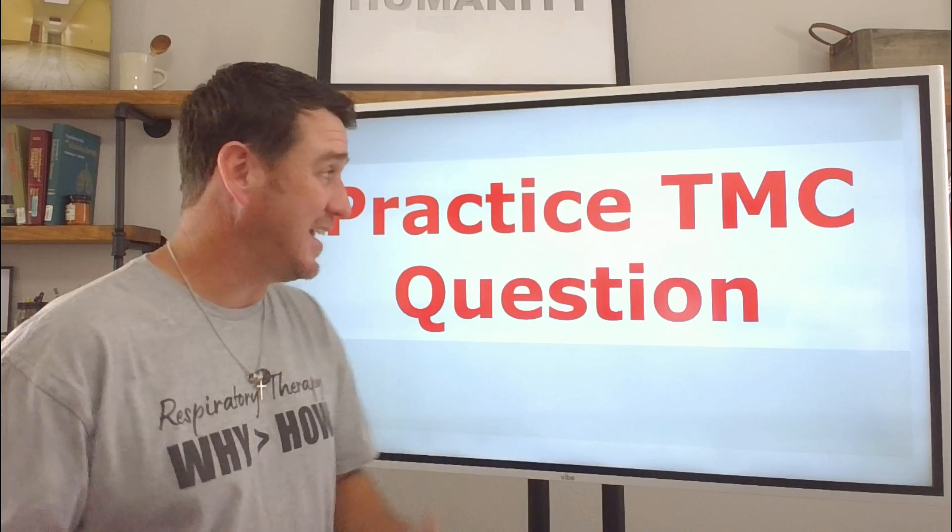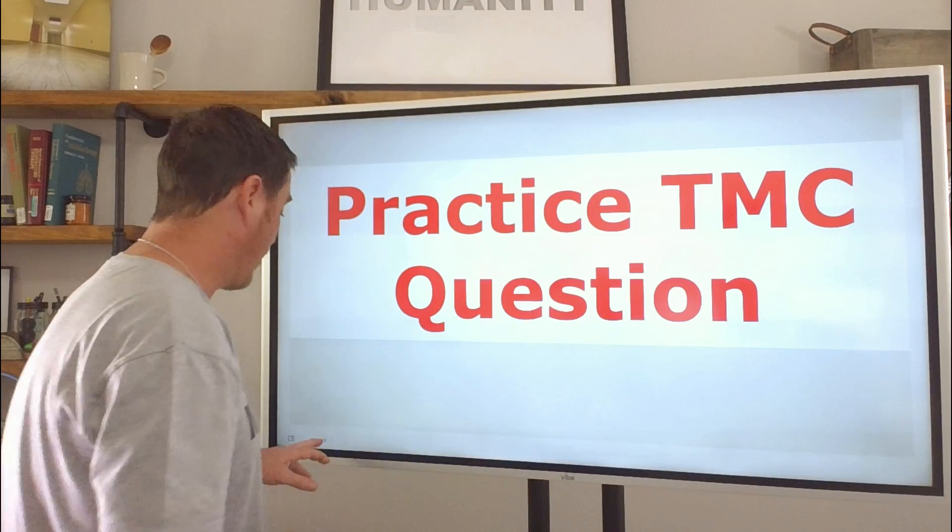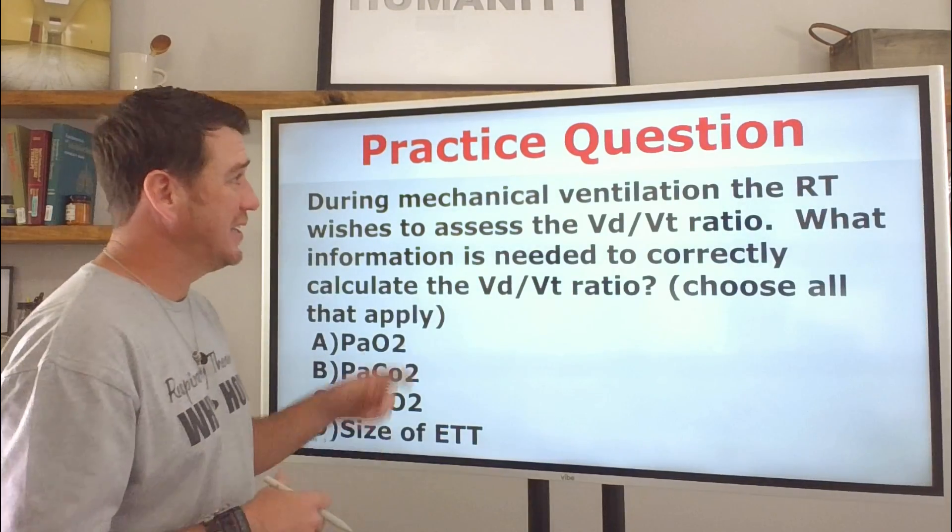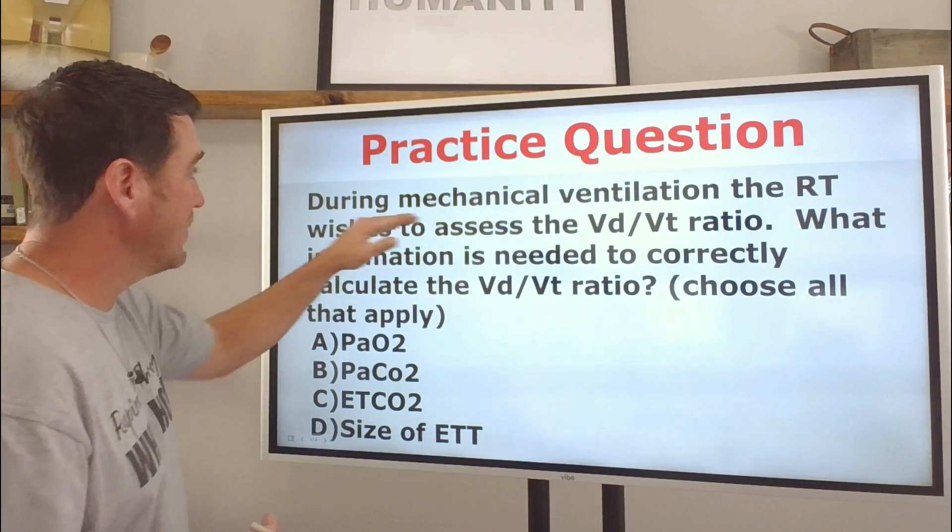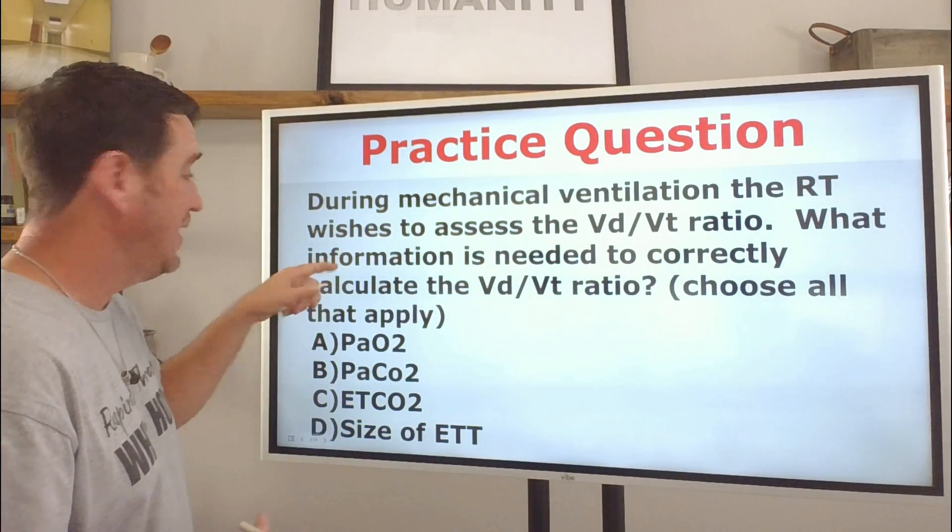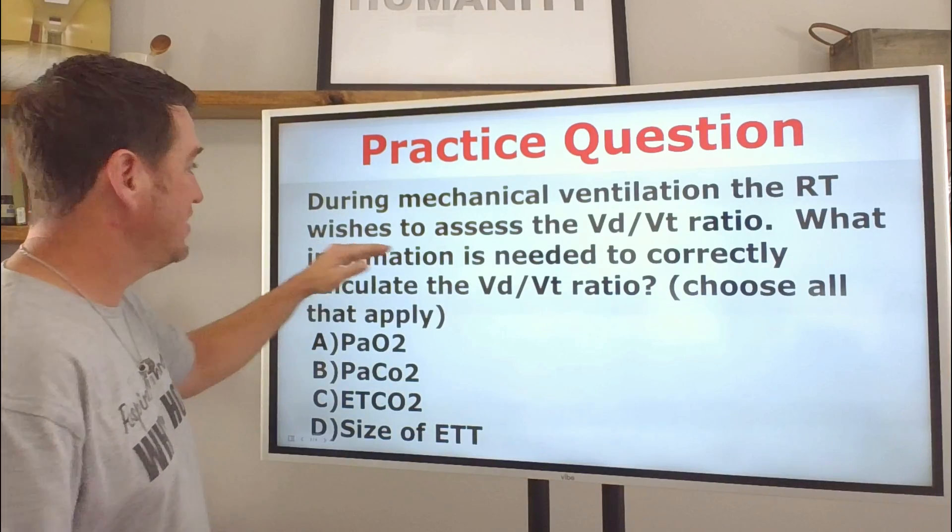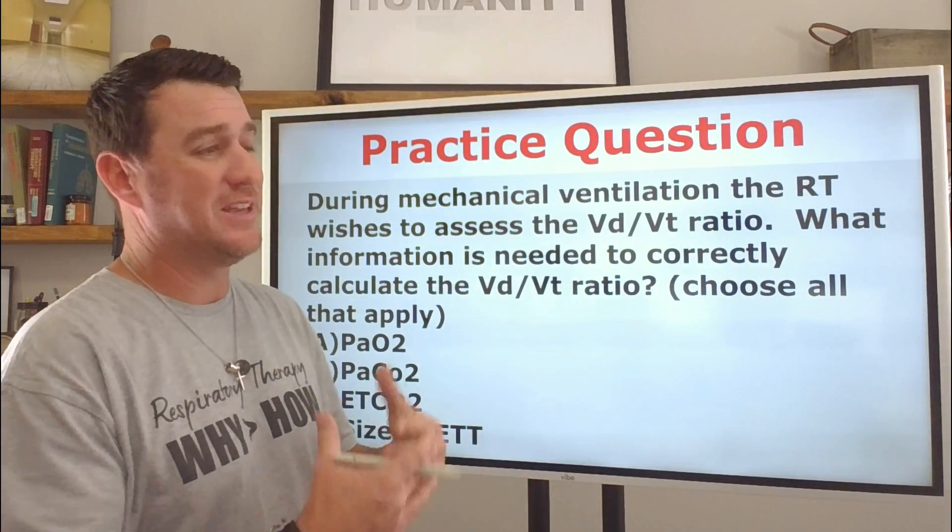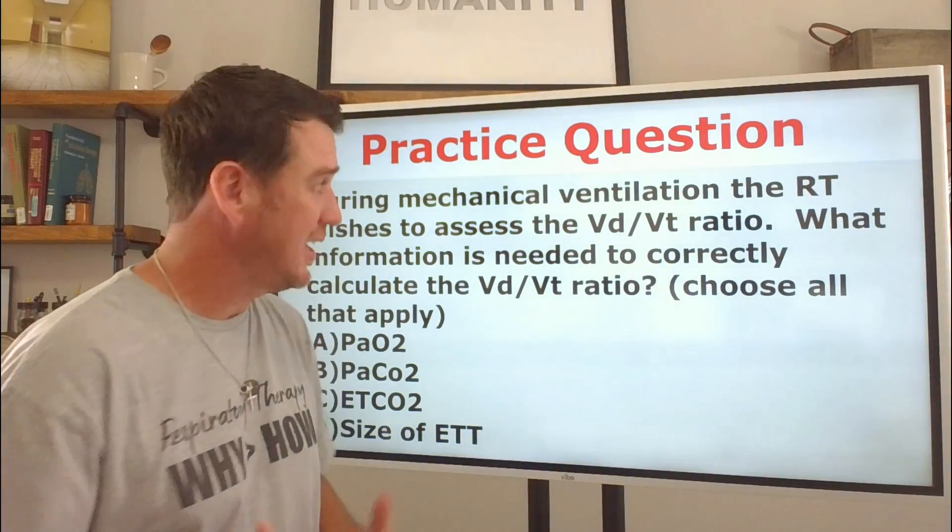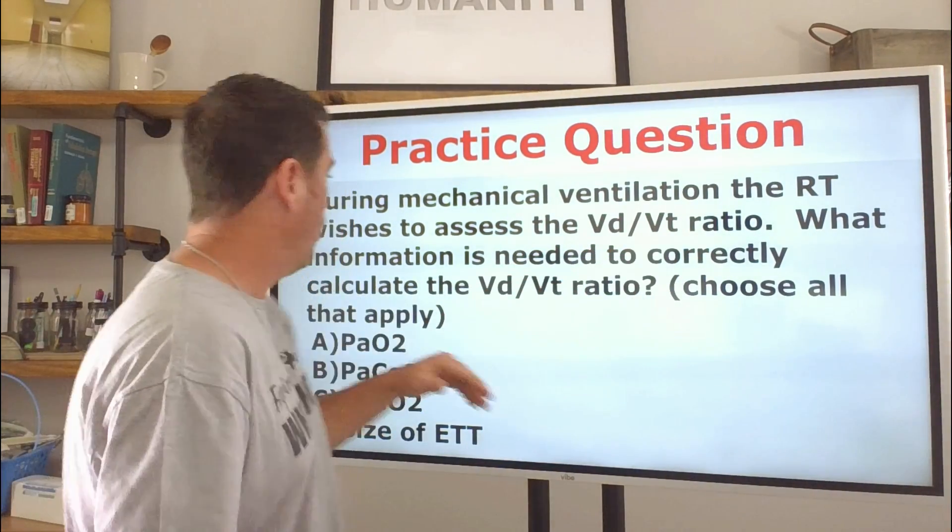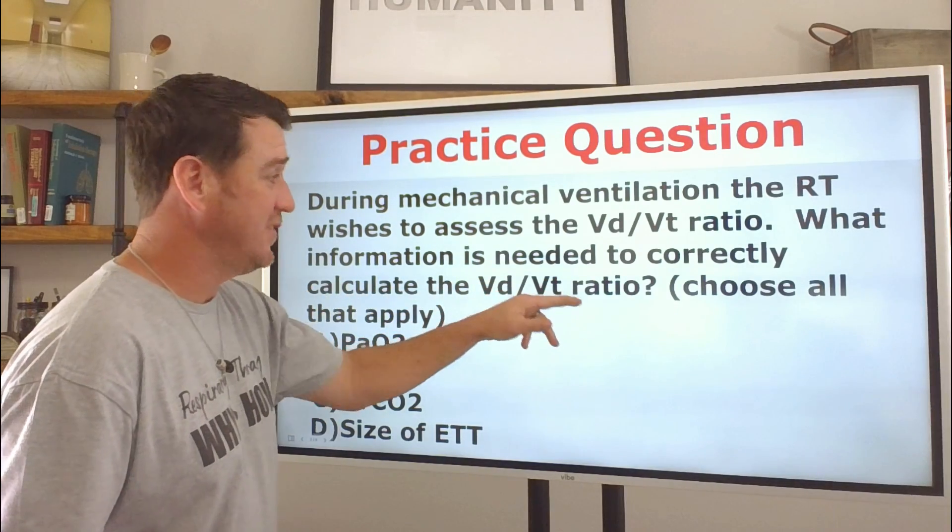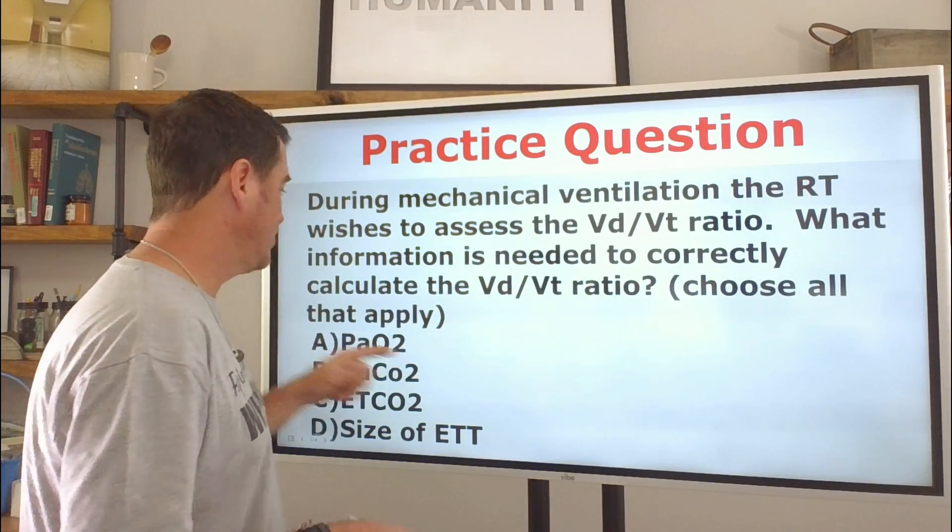All right, so as I stated, we're going to be breaking down a practice TMC question here today. Let's jump into it and let's look at the question. During mechanical ventilation, the RT wishes to assess the VD to VT ratio. Now, why should you assess that? Because it's an important process that you should understand. What information is needed to correctly calculate the VD to VT ratio? Choose all that apply.